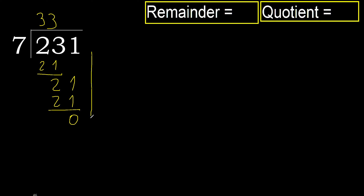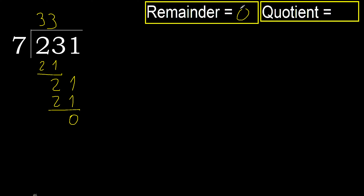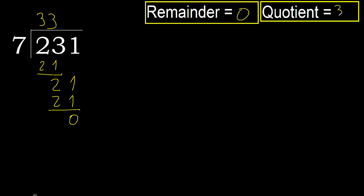Next, there is no more number, therefore we finish. 231 divided by 7 is 33, with remainder 0.